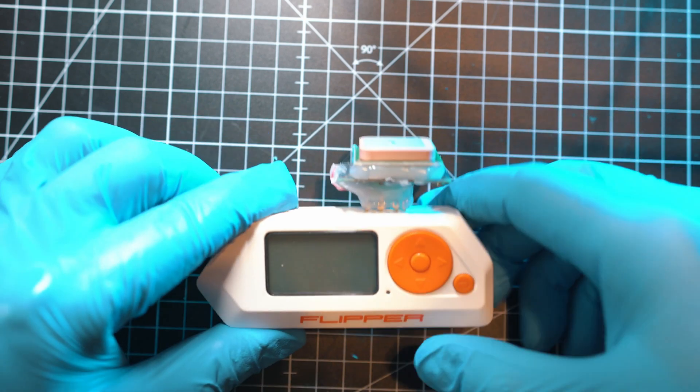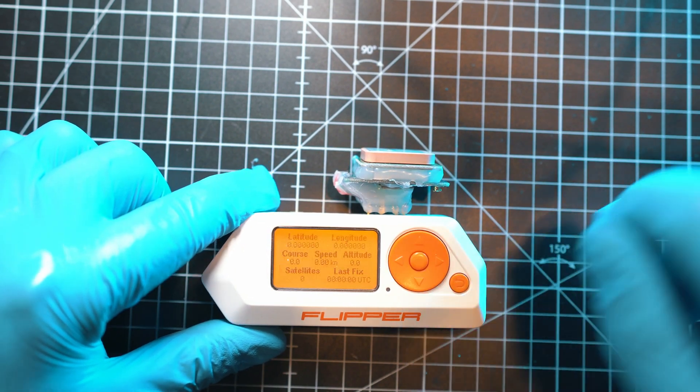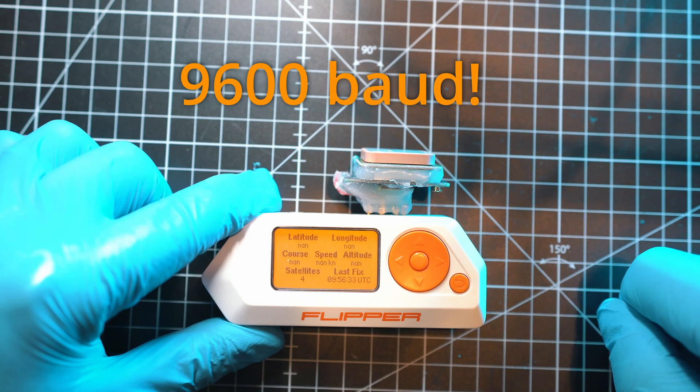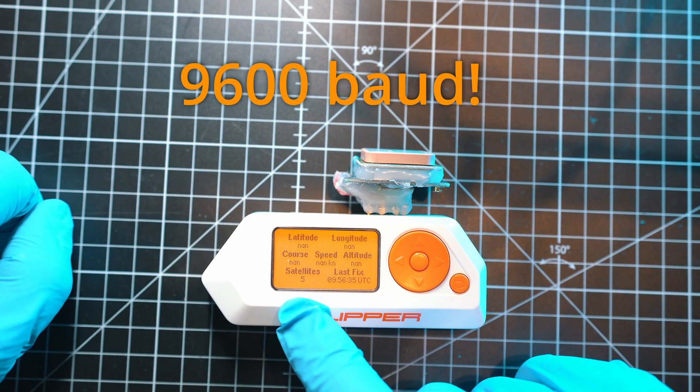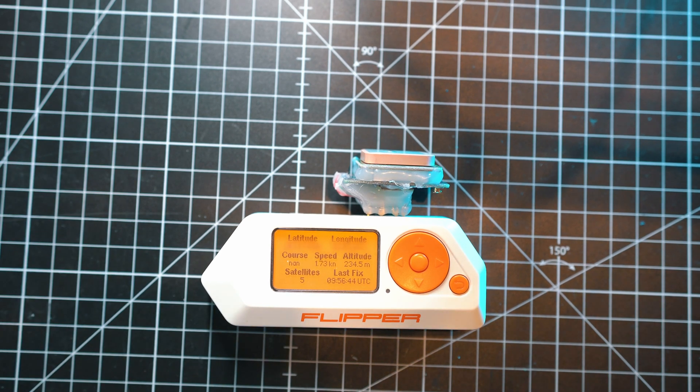Module attached. Flipper is on and app is running. Baud rate to 9600 and we have to wait for data. Boom, all is working.